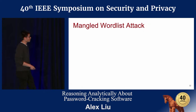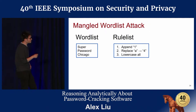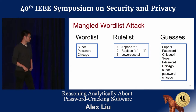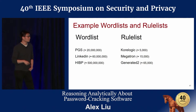The most common attack performed by these tools is what we call a mangled wordlist attack. It takes two types of inputs: first, a wordlist consisting of common passwords or words that are good starting points; second, a rule list that specifies how to perturb words. The tool issues a stream of guesses — it appends one to 'super' and guesses 'super1', then appends one to 'password' and guesses 'password1', and so on through the wordlist, then moves to the second rule. A wordlist might have 20-500 million words, a rulelist 5,000-65,000 rules, yielding billions to quadrillions of guesses.